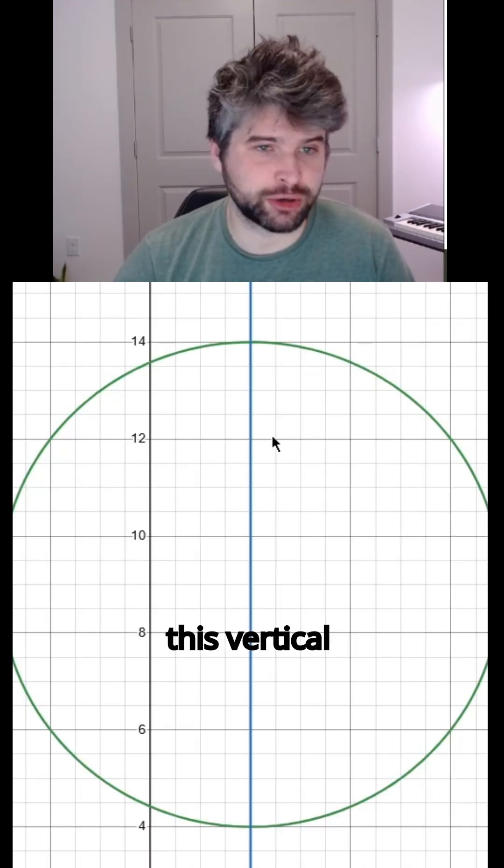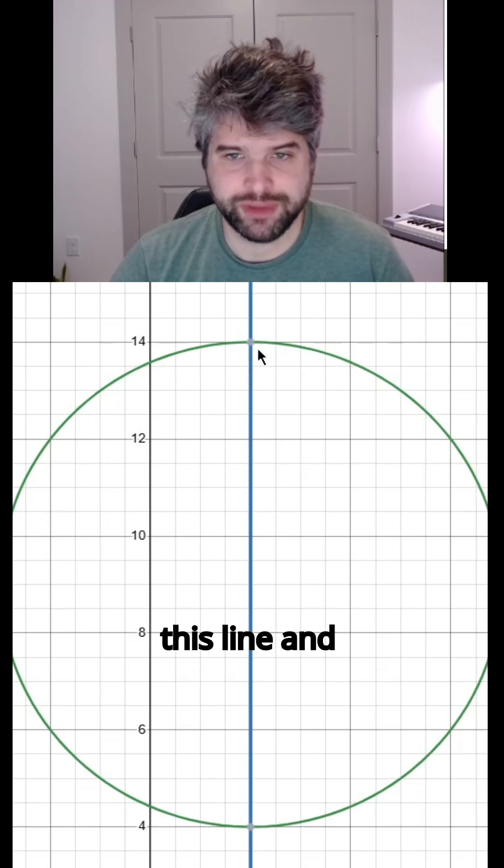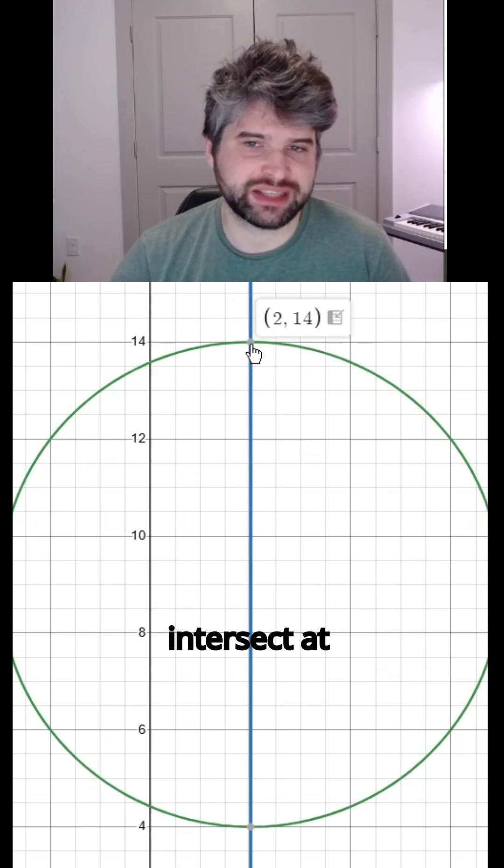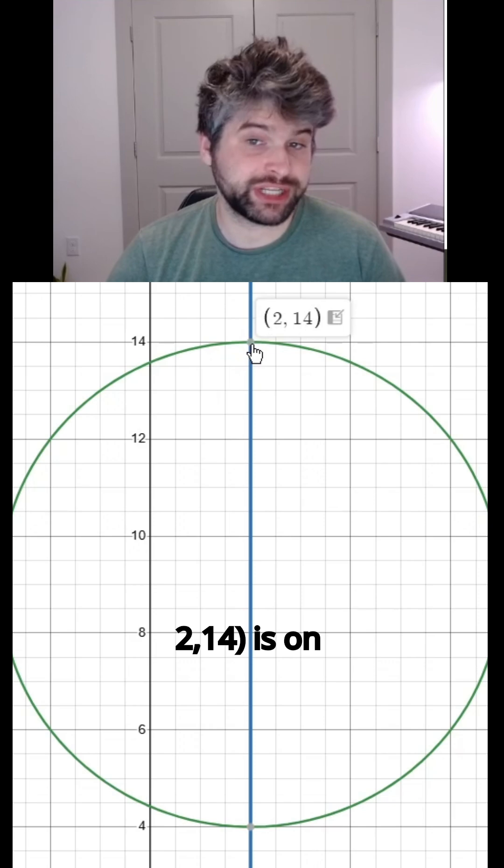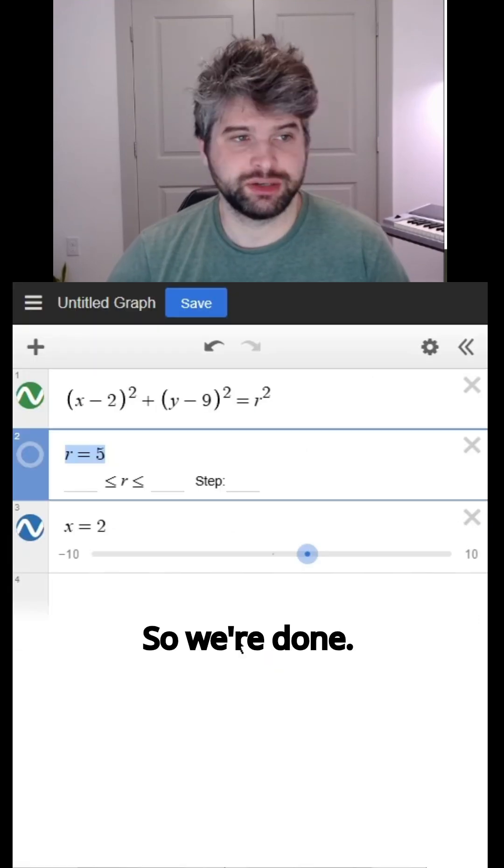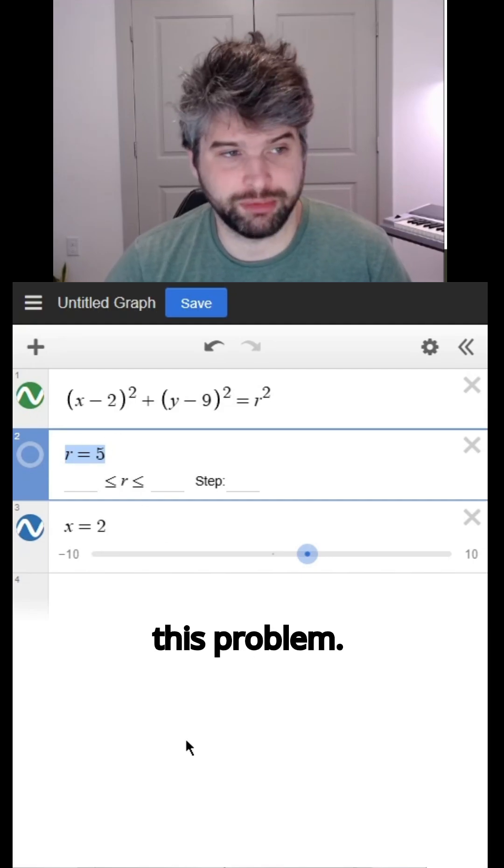And we get this vertical line that goes through the center of our circle. And then we could click on this line and hover over this point. And Desmos is telling us that this line and this circle intersect at the point (2, 14). So (2, 14) is on the circle. And down here (2, 4) is also on the circle. So we're done. We've confirmed that r equals five is the solution to this problem.